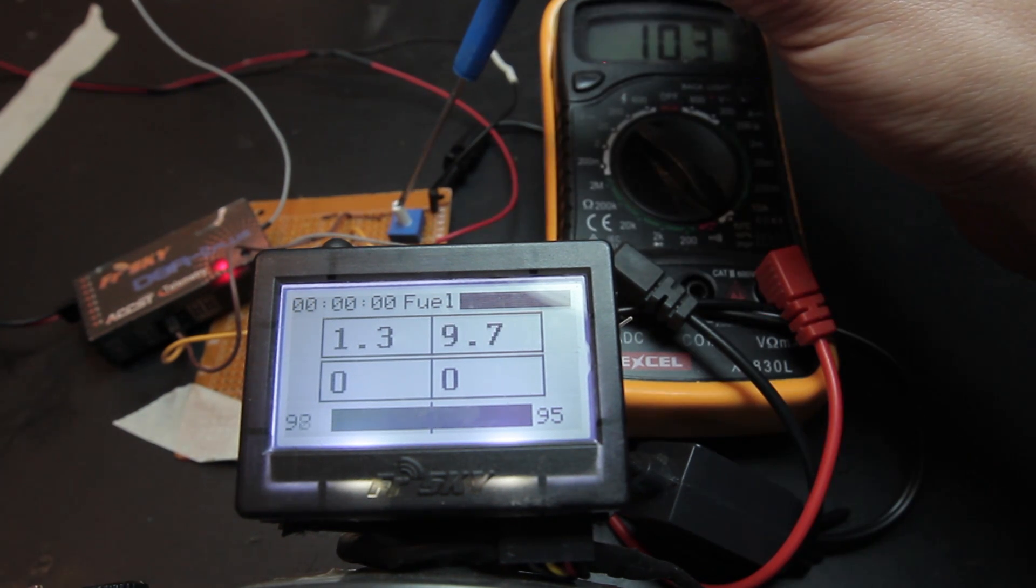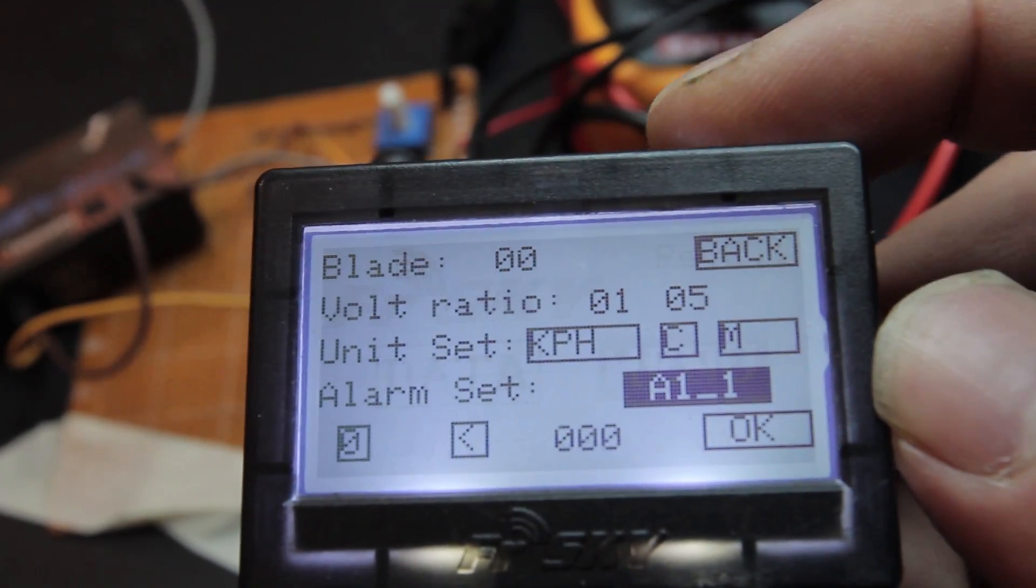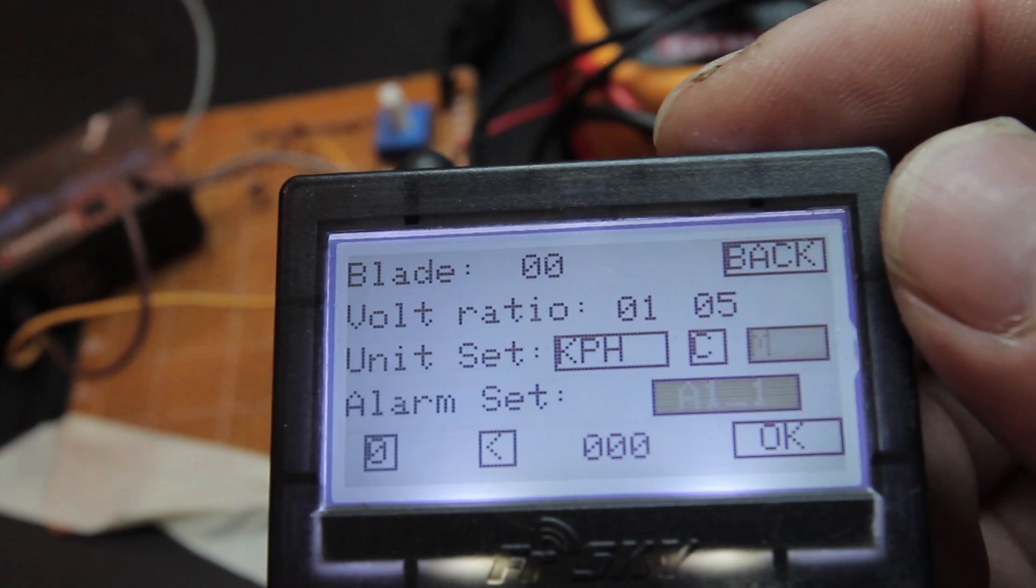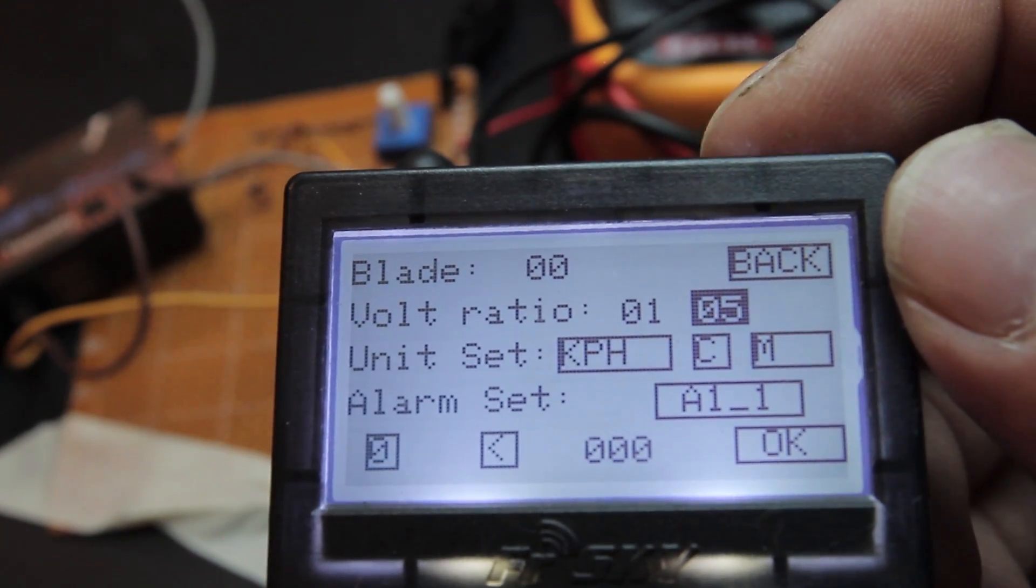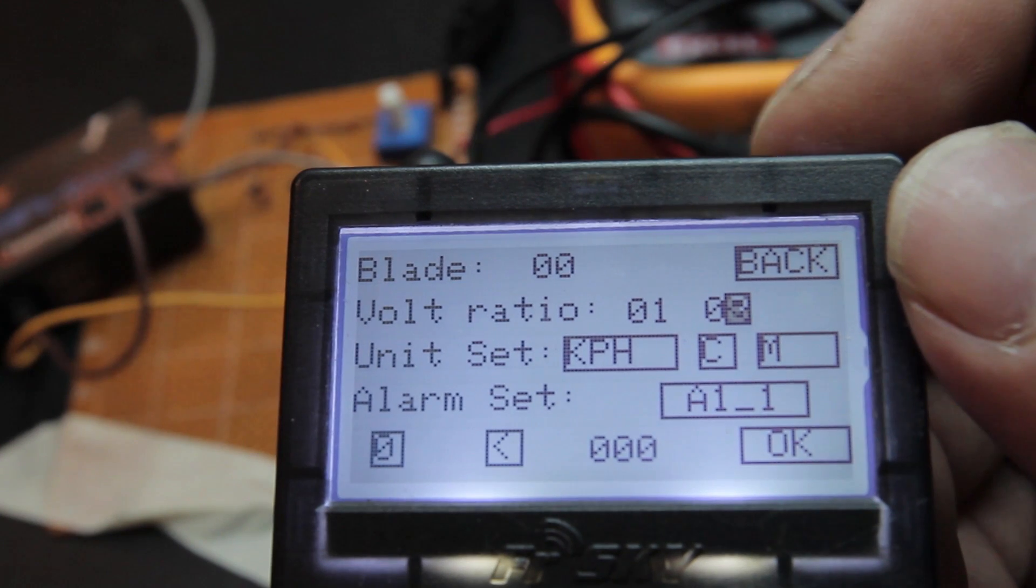If you can't reach the right value, you probably have to adjust the voltage ratio. In my case, on the FrSky FLD-02 telemetry display, I can simply do this by entering the menu and changing the voltage ratio.